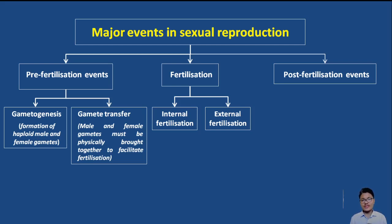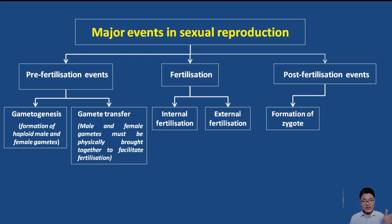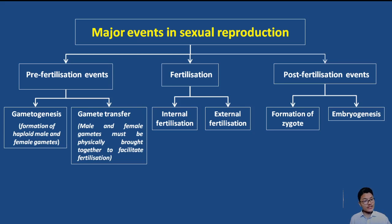What are the post-fertilization events? After fertilization, we have the formation of the zygote. After zygote formation, the zygote will undergo mitotic division to form an embryo. Embryo formation involves not just mitotic division but also differentiation — cells get specialized to form different tissues, and tissues form different organs. So embryogenesis is one of the major events during post-fertilization. Formation of zygote and embryogenesis are the two major activities occurring during post-fertilization events.